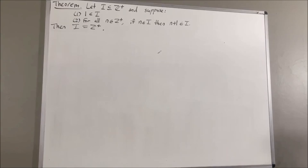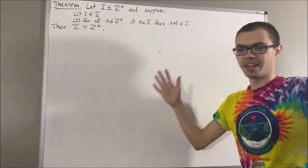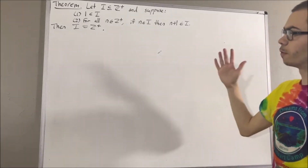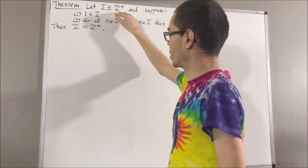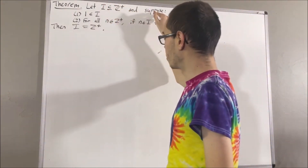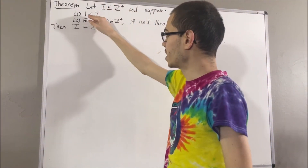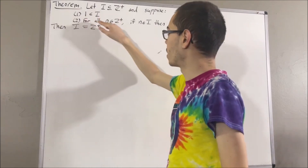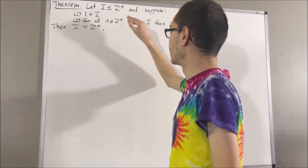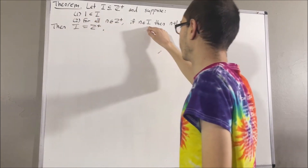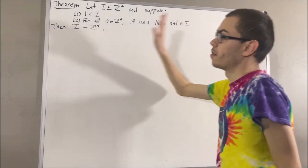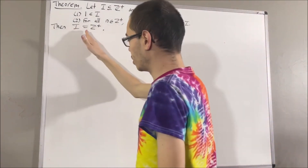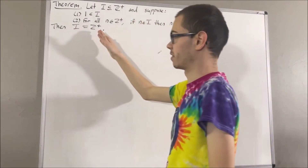Hello! In this video, we are going to prove the following theorem. Let i be a subset of the positive integers, and suppose 1 is an element of i, and for all positive integers n, if n is an element of i, then n plus 1 is an element of i. Then i is equal to the set of positive integers.